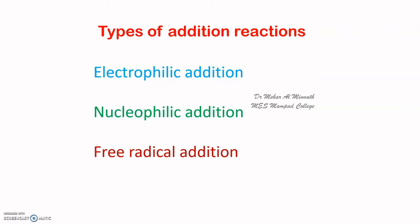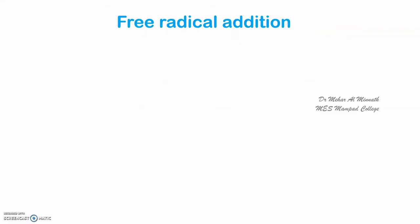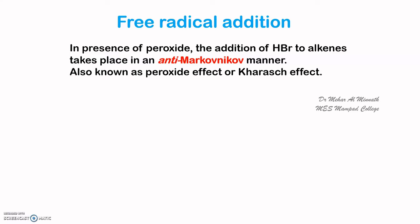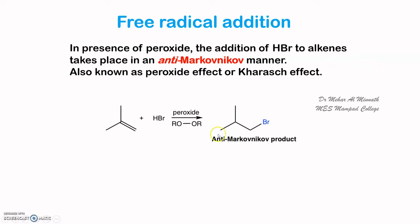Free radical addition is particularly observed when HBr is added to alkenes in the presence of peroxide, giving an anti-Markovnikov product. In an earlier video on electrophilic addition, we saw that HBr gives a Markovnikov product. But in the presence of peroxide it gives an anti-Markovnikov product. This is also known as the peroxide effect or the Kharasch effect, named after a scientist. In the presence of peroxide, bromine is added onto the least substituted carbon — this is the anti-Markovnikov product.